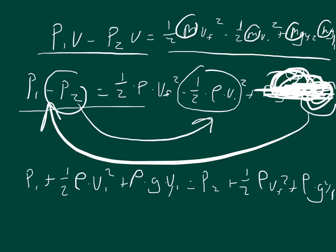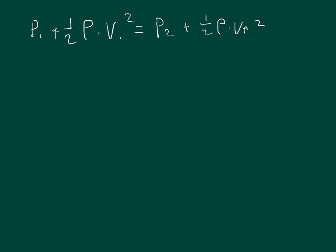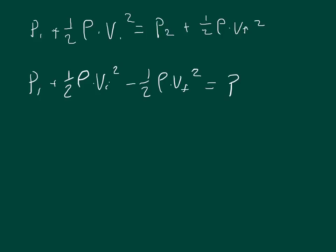So the initial pressure minus the final pressure equals the change in kinetic energy divided by volume. Rearranging so pressures are on opposite sides, we get that the final pressure equals the initial pressure plus one-half times density times the initial velocity squared minus one-half times density times the final velocity squared.